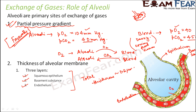The thickness of the alveolar membrane is really thin, and since the epithelium and endothelium layers are so close, they allow the permeability of gases. The gases can actually move from alveoli to the capillaries and vice versa. So the thickness of the alveolar membrane is also favorable for the exchange of carbon dioxide and oxygen across the alveolar membrane.